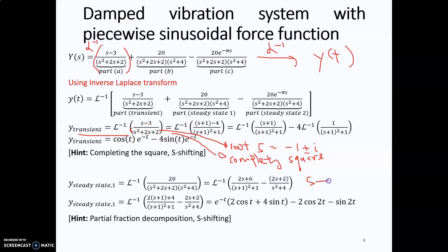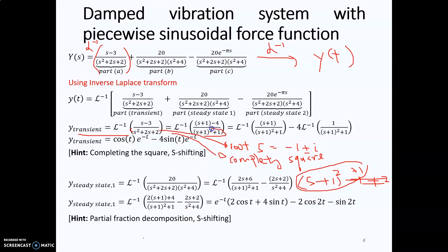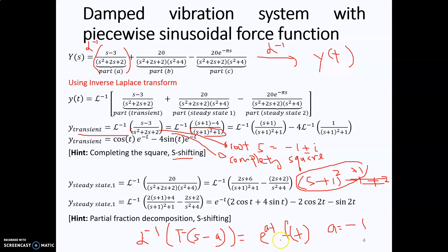From the denominator, we take s plus 2: dividing 2 by 2 gives 1 squared, then minus 1 plus 2 gives a remainder of 1. So s squared plus 2s plus 2 becomes (s plus 1) squared plus 1. This is the completing the square result. The (s plus 1) term in the denominator indicates an s-shift, so comparing with s minus a, we get a equal to negative 1.